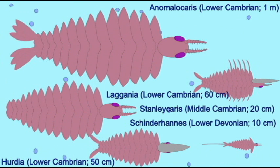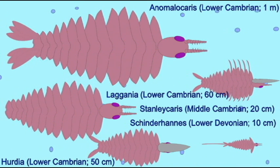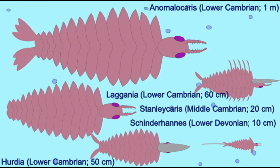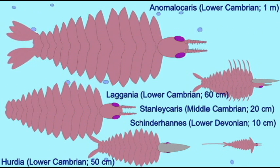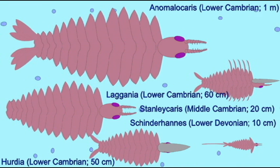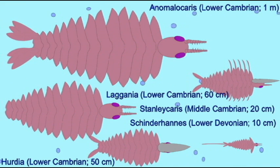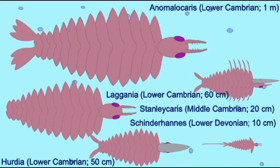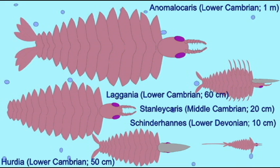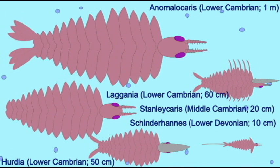This is because of a segmented body plan, very large complex compound eyes similar to those of arthropods, segmented feeding appendages, and a number of other complex features, perhaps best known in Anomalocaris, which could reach a meter in length and was probably the largest predator of the Lower Cambrian.